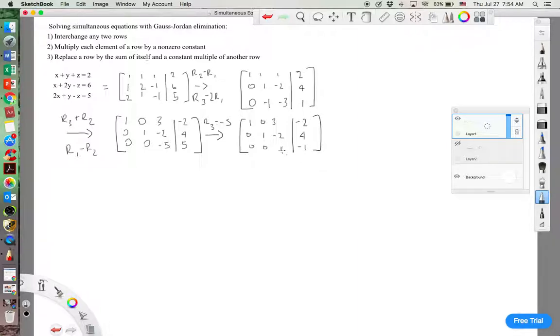We're going to take this number and use it to eliminate the other two non-zero constants in that column. And so let's do them together, r1 minus 3r3, and r2 plus 2r3.